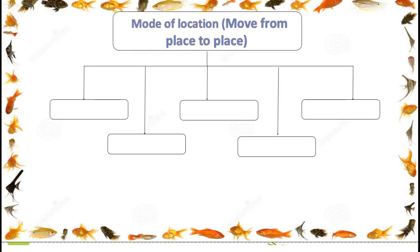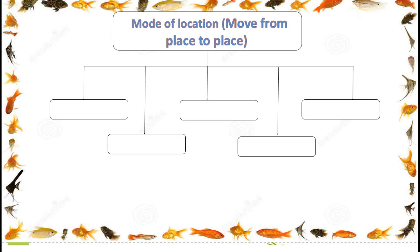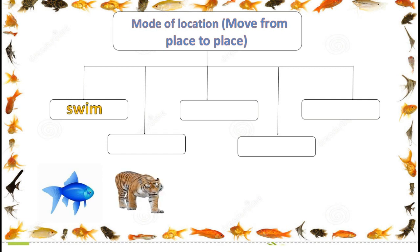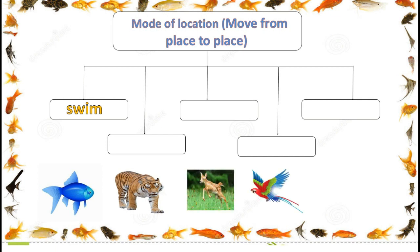Mode of locomotion — how animals move from place to place. Children, can you guess how a fish moves in water? Yes, you are right — fish swim in water. In the same way, you have to complete this concept map.